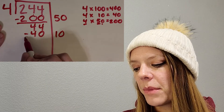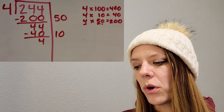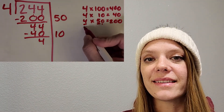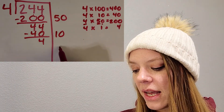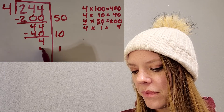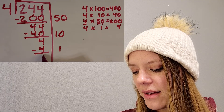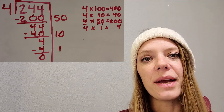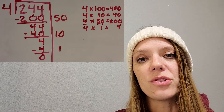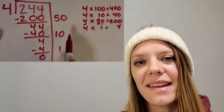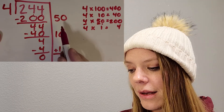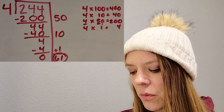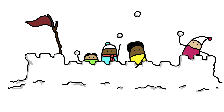Then I subtract — division is repeatedly subtracting, giving away those snowballs. We have forty-four snowballs left. I look back at my mental math notes and see a number close to forty-four — I see forty there. So I put a ten along the side and forty below, then subtract. I just have four snowballs left. How many more can each boy get? Just one more — and four times one is four. Subtract and I get zero. I add up the numbers along the side: fifty plus ten plus one is sixty-one. They each get sixty-one snowballs!